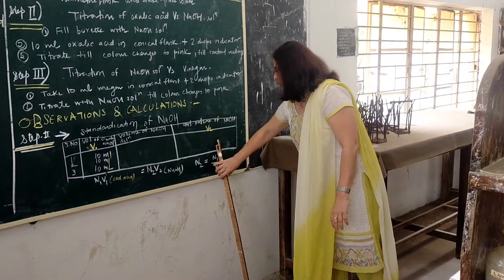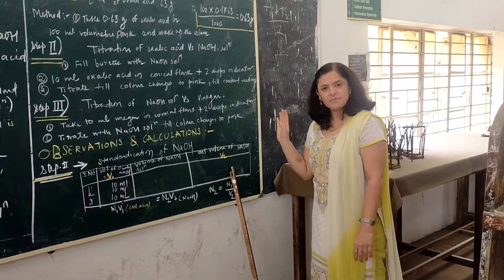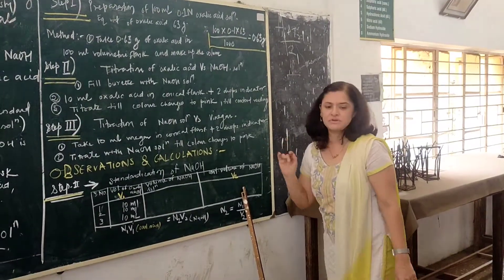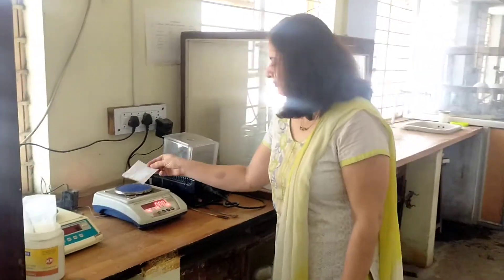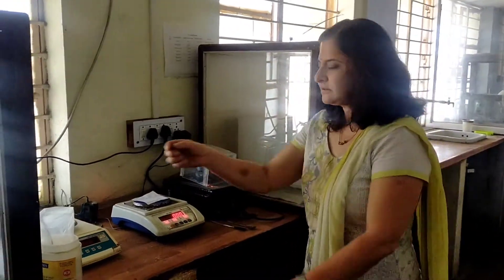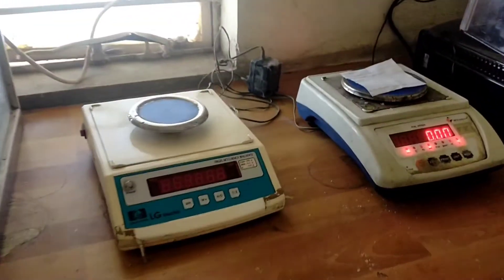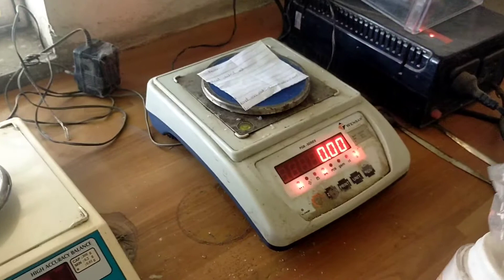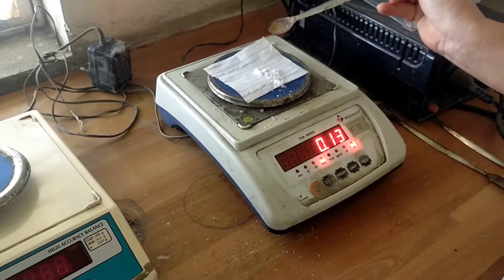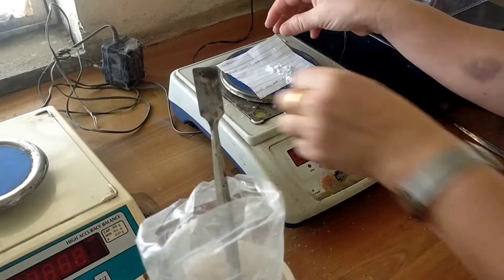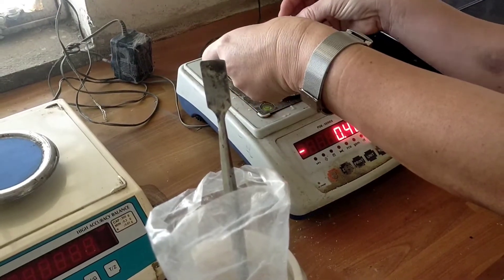Now we will see on the balance how 0.63 grams of oxalic acid is to be measured. We use this digital weighing machine. First we calibrate it by setting to zero. Now zero is set. Take 0.63 grams of oxalic acid.